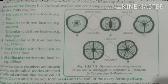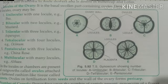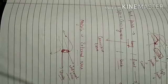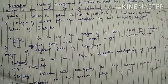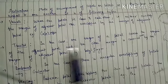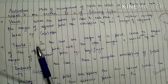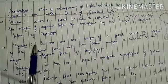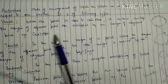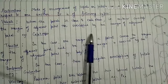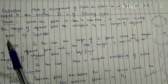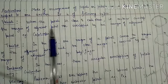Another topic in your syllabus is aestivation, which is the arrangement of sepals and petals. The mode of arrangement of sepals or petals in a flower bud with respect to one another is known as aestivation. The first type is valvate aestivation, in which the petals lie close to one another and just touch each other with no overlapping observed.